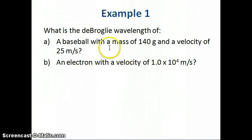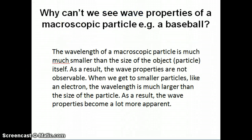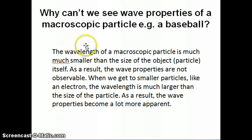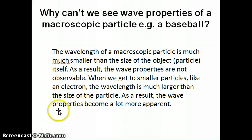We did an example to calculate the wavelength of two different objects: a fairly large particle like a baseball, and a very small particle like an electron. We found that the wavelength of a macroscopic particle like the baseball is so small that it's not something we can measure, and it's so small compared to the size of the particle itself that it doesn't make sense to talk about its wave nature. However, for a very small particle like the electron, the wavelength is actually much larger than the size of the particle itself, and as a result the wave properties of the electron become quite observable.